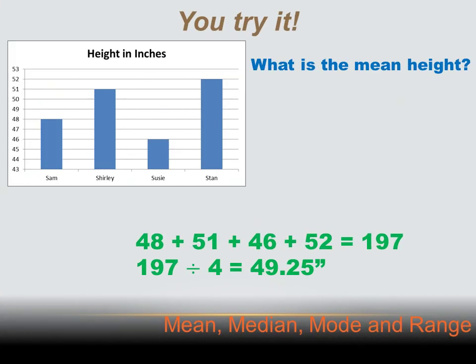We've got a chart showing us the height of various people, and we want to know what the mean height is. Mean is the total of all the individual heights divided by the number of data points. Sam is 48 inches, Shirley is 51 inches, Susie is 46 inches, and Stan is 52 inches. Adding those up gives 197, and dividing by 4 data points gives a mean height of 49.25 inches.